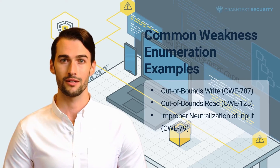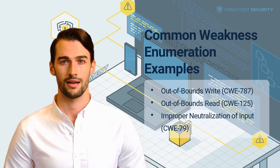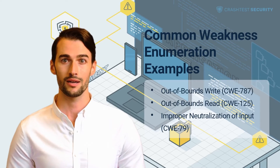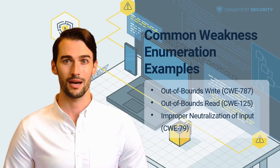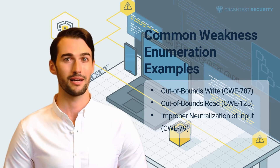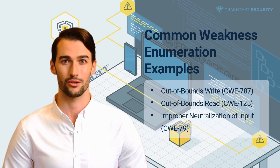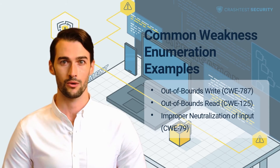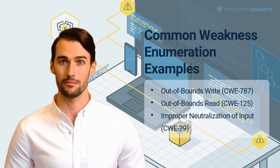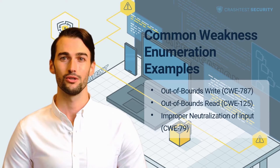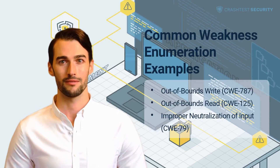A few common security vulnerability types in the CWE list include out-of-bounds write. This security weakness arises when the application writes data outside the boundaries of an intended input buffer. The weakness may also be caused when the application executes pointer arithmetic or alters an index to reference a location outside the memory buffer. This memory corruption often leads to unintended code execution, crashes, or data corruption.